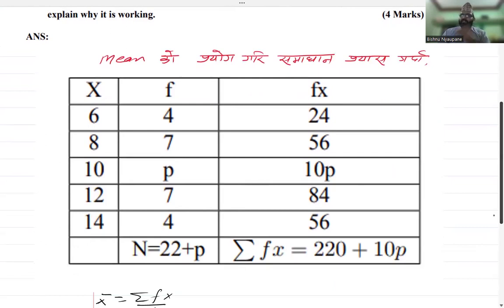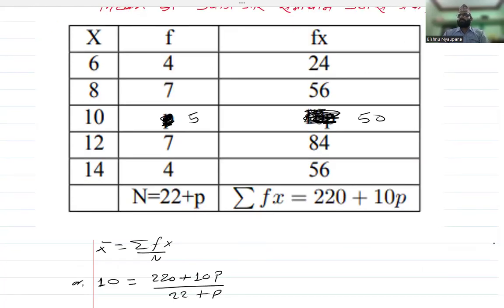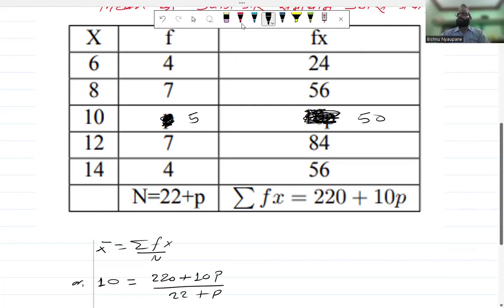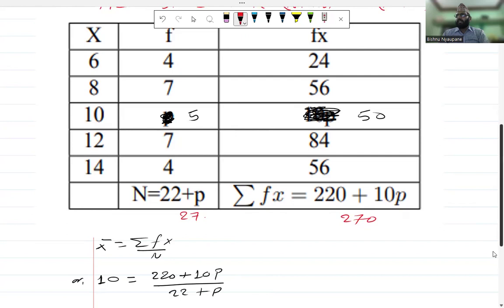Now I will find the value of P. This value of P is 5. With P equals 5, the value becomes 10 into 5 equals 50. When you find n, it is 22 plus 5 equals 27. So Σfx is 220 plus 50 equals 270.